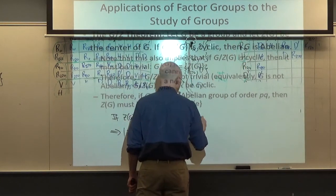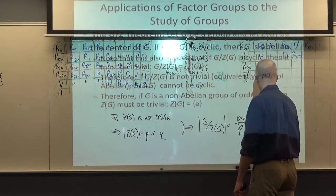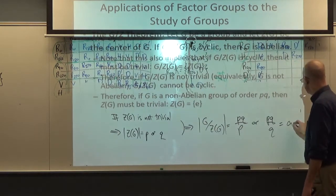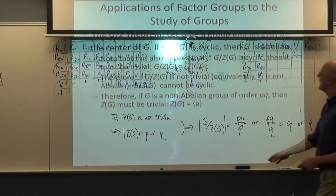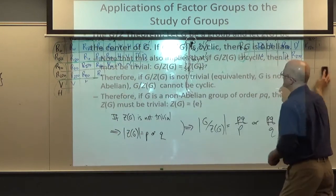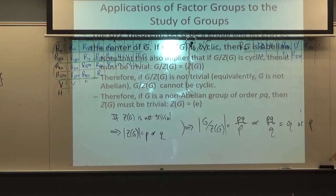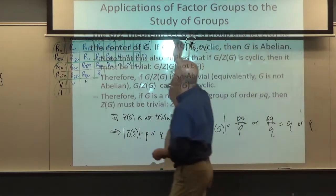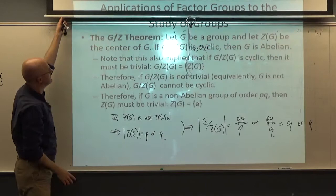But that would imply the factor group G/Z(G) has order either PQ/P = Q or PQ/Q = P. But we know groups of prime order are cyclic, and that would be a contradiction: if the factor group of G by its center is cyclic, it must be trivial. But having prime order would make it a non-trivial cyclic group. That's the contradiction.